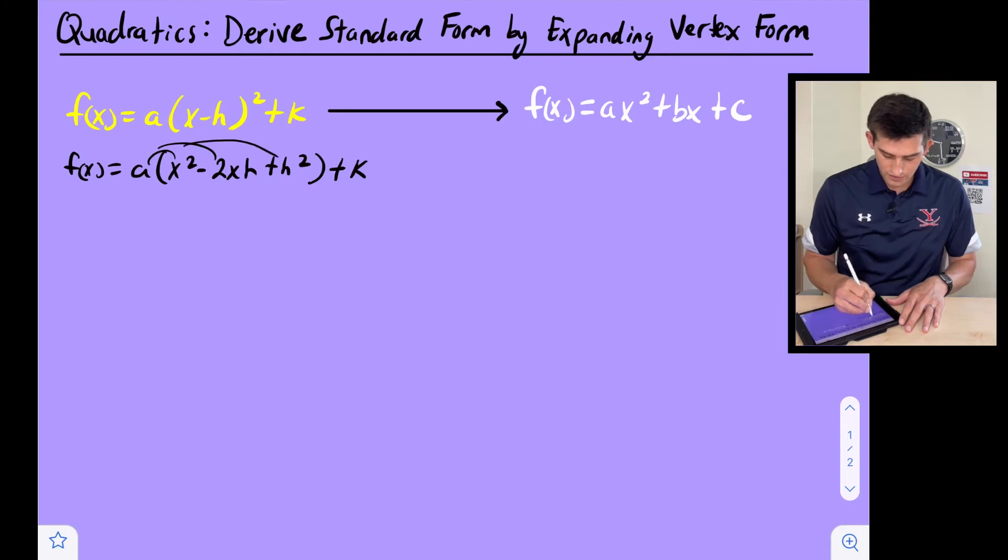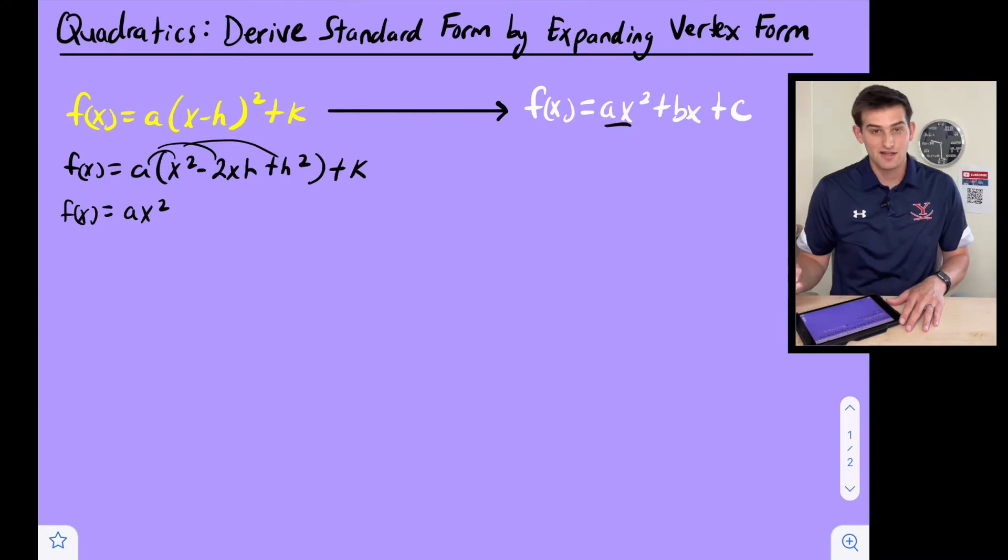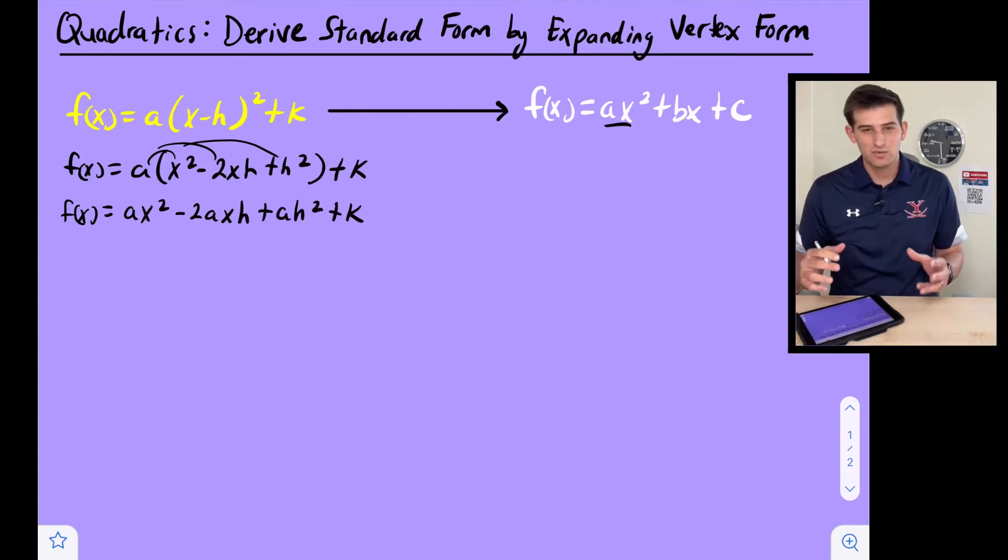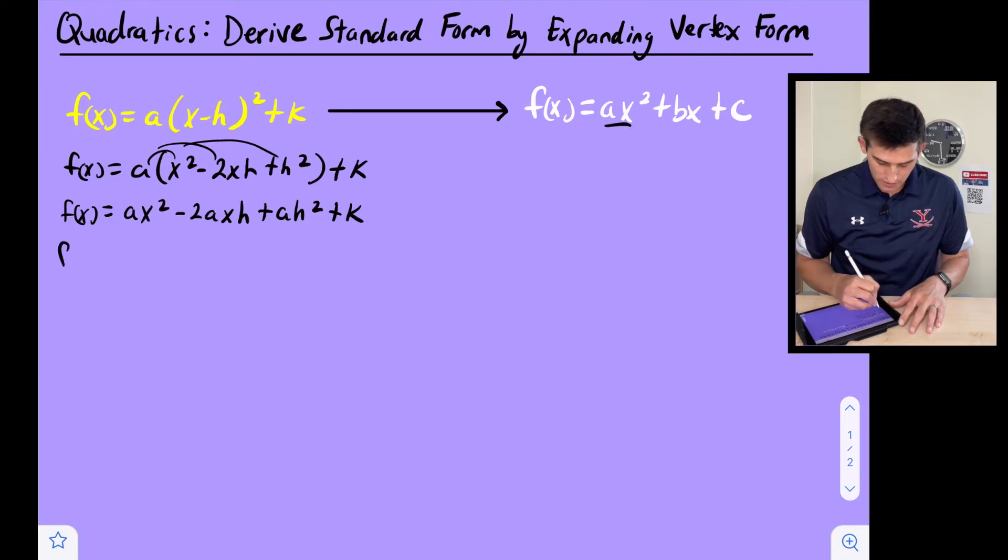Now we can distribute this a here, so a goes to all three terms. So now we have f(x) equals ax² - 2axh + ah² and then +k. Now it looks kind of weird in the middle, but let's use distributive property here to write it in a more simpler way.